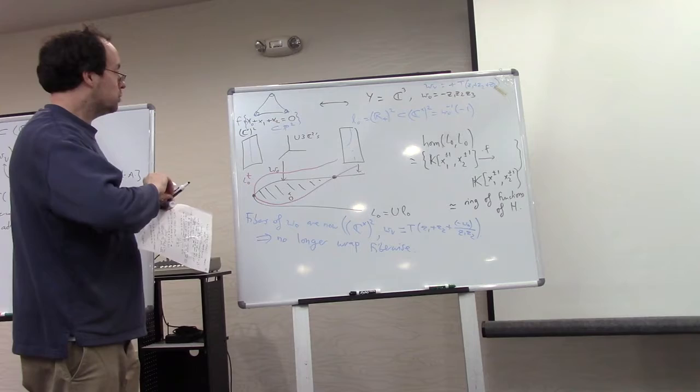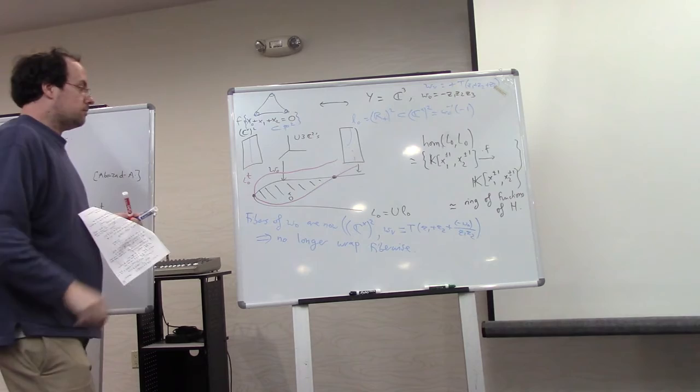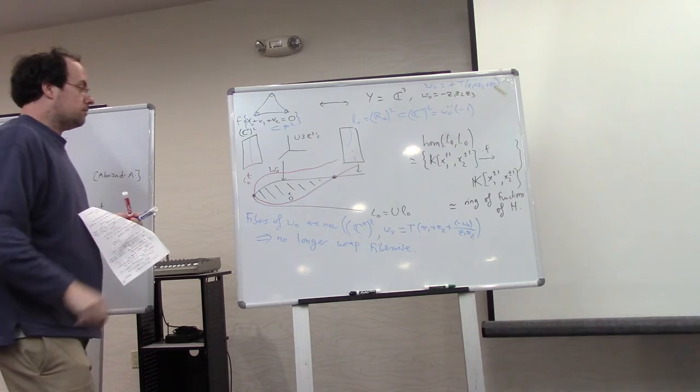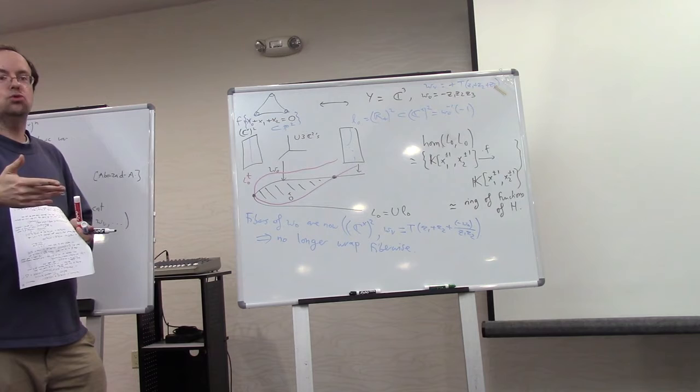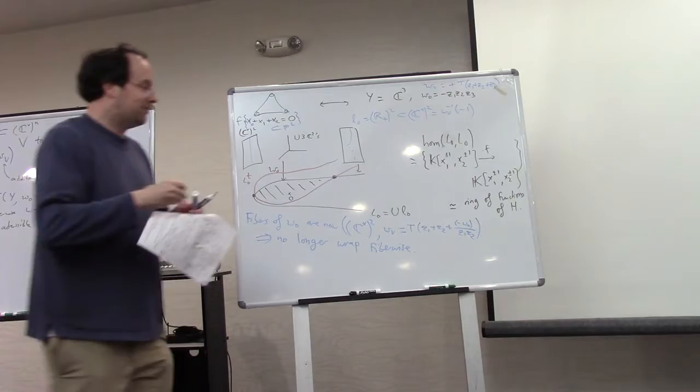So, okay, so we don't wrap fiber-wise, which means we just do a small perturbation at this point. Now, if I try to calculate the endomorphisms of L0, I will find the cohomology of the sheaf from O to itself on P1 inside P2, which is interesting but not very exciting. There's only constant functions. So it's more interesting if I actually look at Lagrangians that are mirror to O.